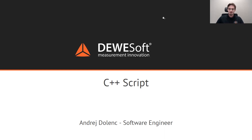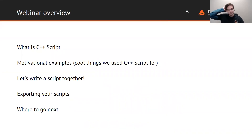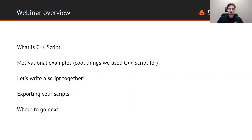So what is this webinar going to look like? First of all, we're going to get to the same level — I'm going to be telling you what C++ script actually is. Then I'm going to give you a bunch of motivational examples, cool stuff that we use C++ script for. Because I absolutely hate PowerPoints, we're just going to do live demos for a bunch of this. Then after that, we're going to write a script together. Then I'll briefly talk about exporting your scripts, and after that, if you're still interested in C++ script, I'm going to refer you to a bunch of other sources where you can learn more.